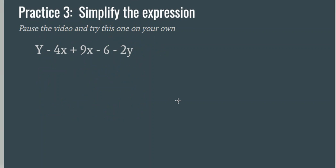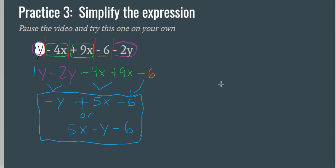Practice number 3 — simplify the expression. Note: there was a typo in the problem; the capital Y should be lowercase y. I got 5x minus y minus 6, or you might have written negative y plus 5x minus 6 — either one is correct. Remember in algebra, they usually write the variables in alphabetical order first and then the numbers with no variables. That's how you combine like terms: first separate all your terms, second identify which ones are like, and third combine your like terms by either adding or subtracting. If you have any questions, please ask a teacher. See you later!